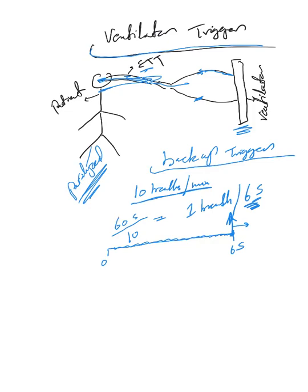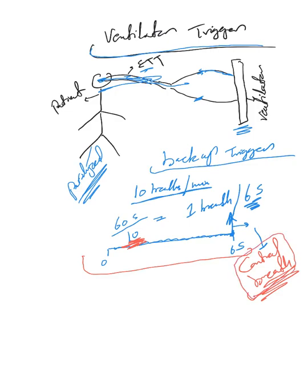This breath is triggered and delivered by the ventilator, and we call this kind of breath a control breath, because it was initiated and delivered by the ventilator. As you can see, this is mainly a backup mechanism, so this patient at minimum will get 10 breaths per minute.